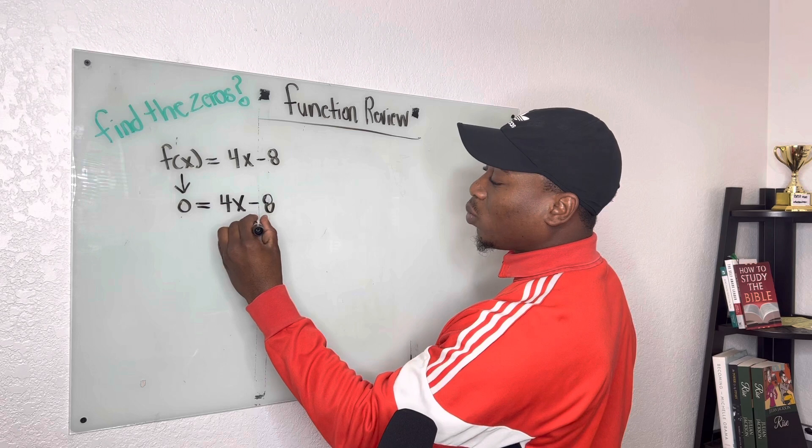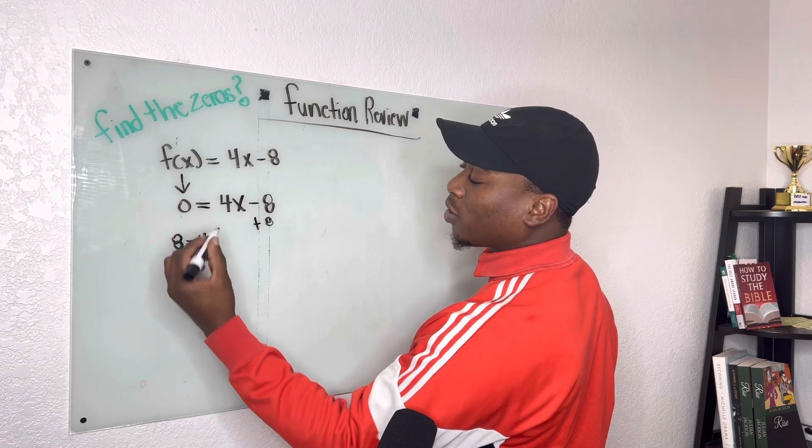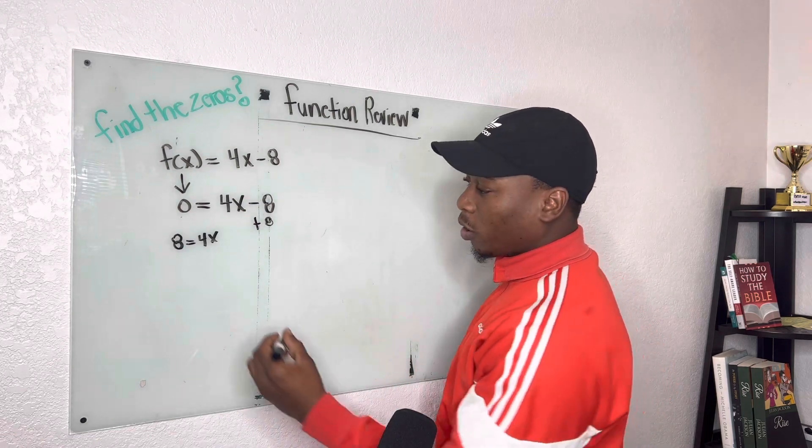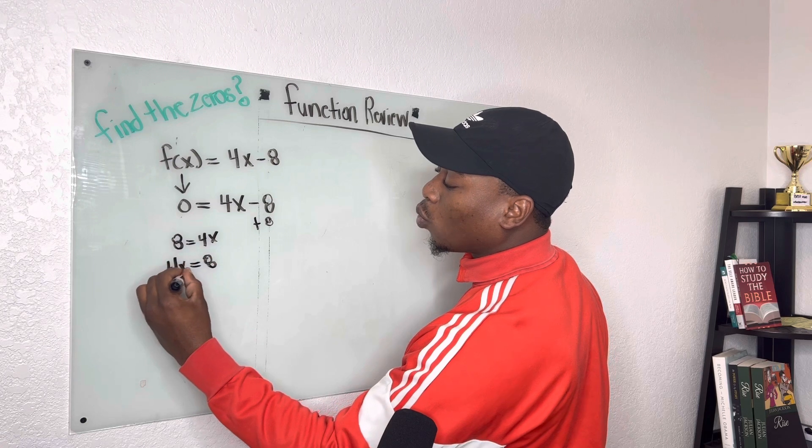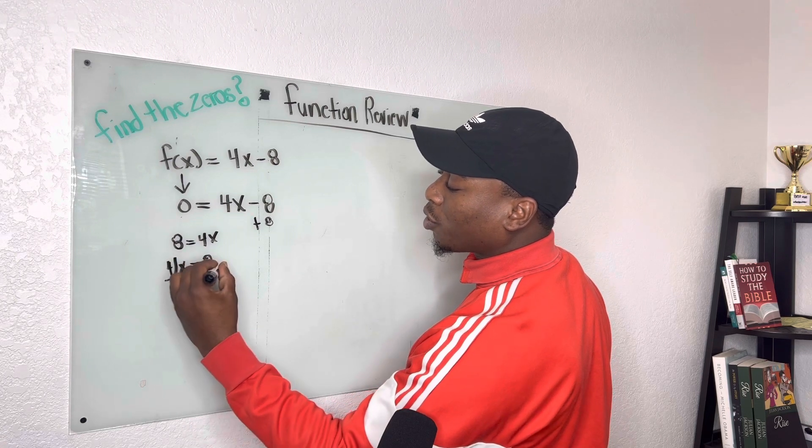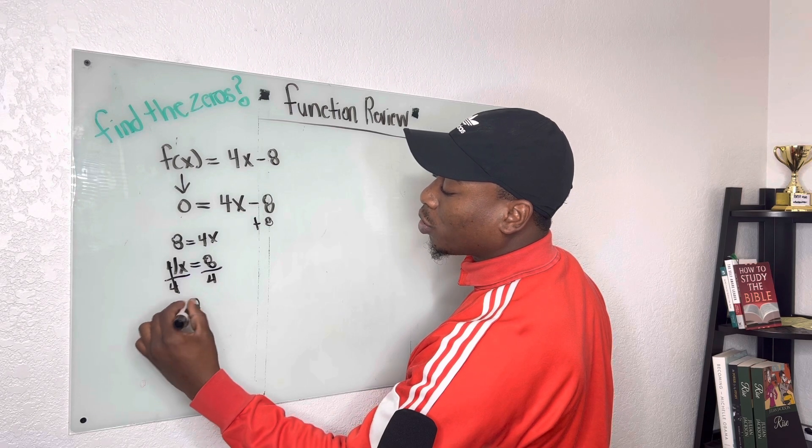So once we do that, we'll have 8 is equal to 4x, or if you like your variables the other way around, 4x is equal to 8. Once we divide by 4, we know x is equal to 2.